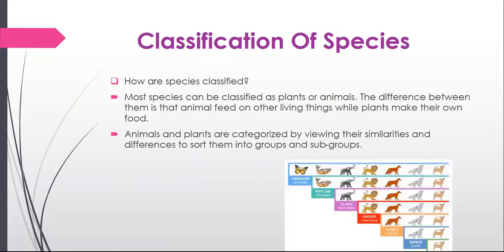Classification of species. We have many different species present on the planet. Classifying these species helps us understand their biology and identify new species. Classification is the process of sorting living things into groups.